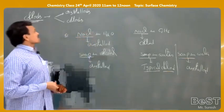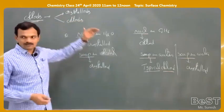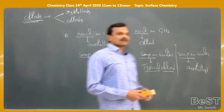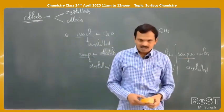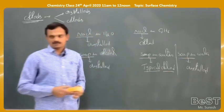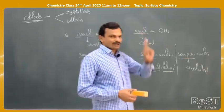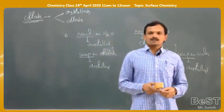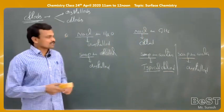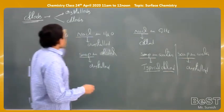One more term is suspension. Depending on the size of the solute particles dispersed, solutions are classified into three types: true solution, colloidal solution (simply called colloid), and suspension. This classification is based on the size of the particles.